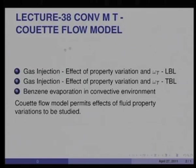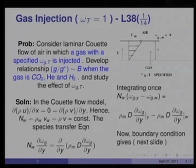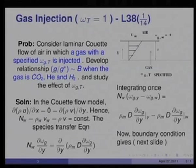The main objective of applying the Couette flow model to convective mass transfer is to study the effect of fluid property variations. Consider laminar Couette flow of air where the velocity profile is assumed linear, with velocity u_infinity at a distance delta from the wall. A gas with a specified omega_gas_t is injected at the wall. We develop the relationship g/g* as a function of b when the gas is CO2, helium, or hydrogen.